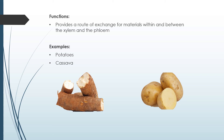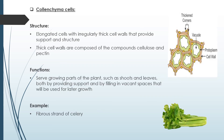Parenchyma cells provide a route of exchange for materials between xylem and phloem; examples include potatoes. Collenchyma cells are elongated cells with irregularly thick cell walls composed of cellulose and pectin, providing support and structure. They serve growing parts of plants such as shoots and leaves, both by providing support and by filling in vacant spaces reserved for later growth. Examples include the fibrous strands in celery.